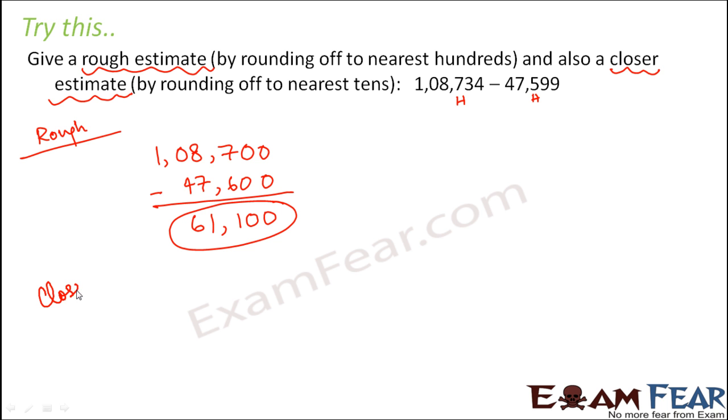Now let us find out the closer estimate. So for the closer estimate, we will round it off to the nearest tens. Now when you round it off to the nearest tens, so this 1,08,734 would lie between 1,08,730 and 740. Now there the midpoint would be 35. So 34 is less than 35. So this is more close to 1,08,730.